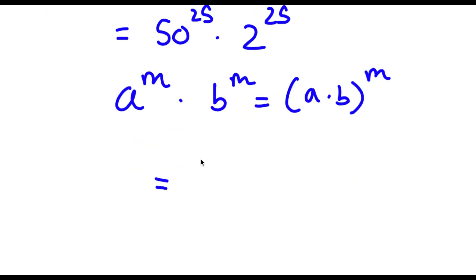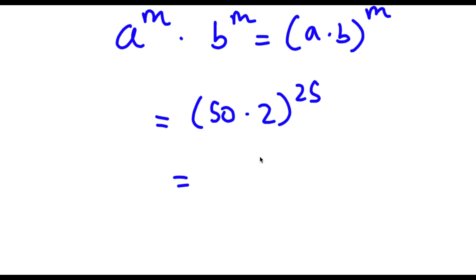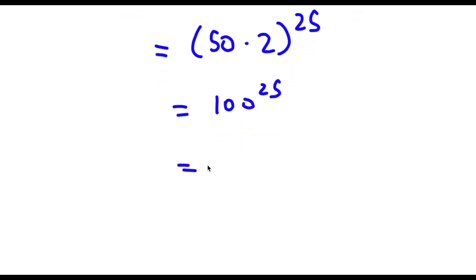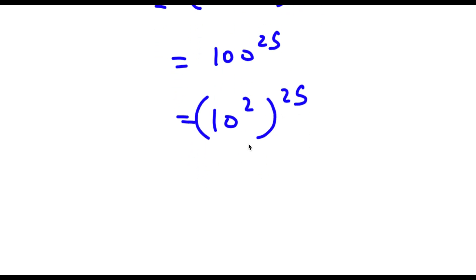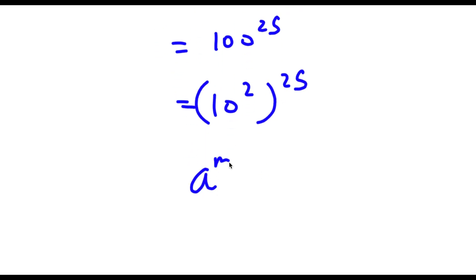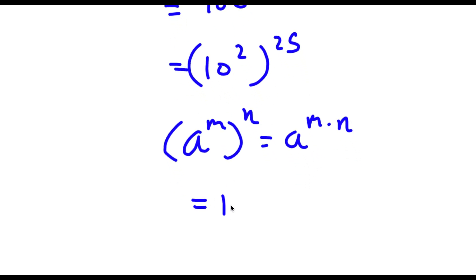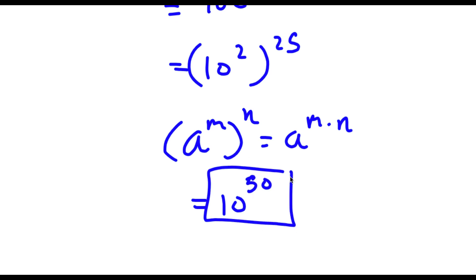So in this case, this is going to equal 50 times 2 to the power of 25. Now 50 times 2 is 100, so now I have 100 to the power of 25. And 100 is the same thing as 10 squared. So now I have 10 squared to the power of 25. And if I have something in the form a to the power of m to the power of n, this is equal to a to the power of m times n. So 2 times 25 is 50, so I have 10 to the power of 50. So this is my answer.